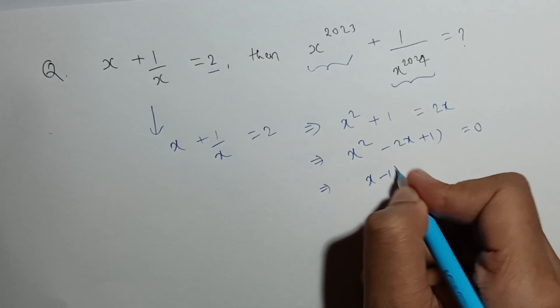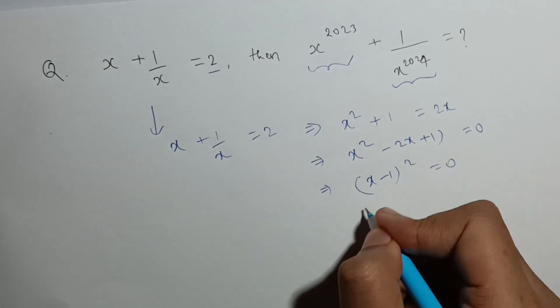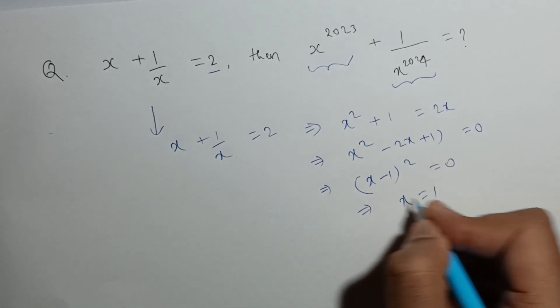Now this is nothing but x minus 1 whole square. So from here can I get x equal to 1.